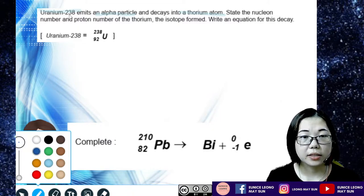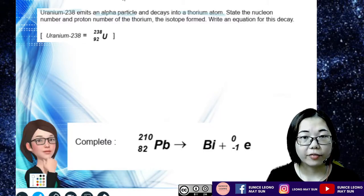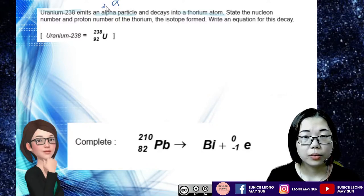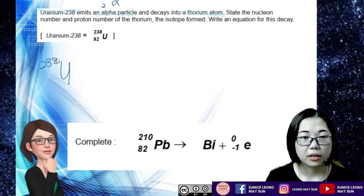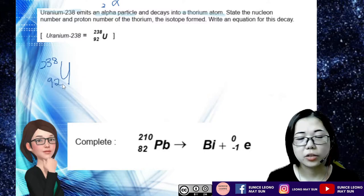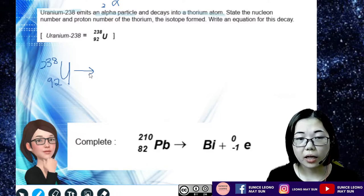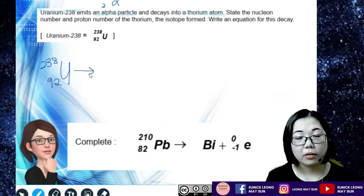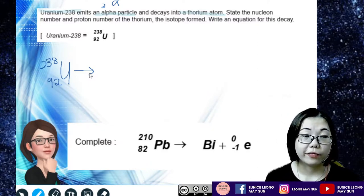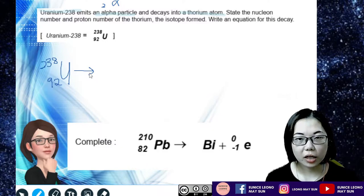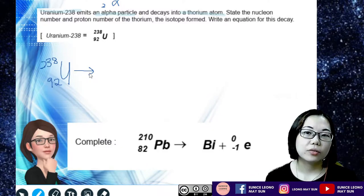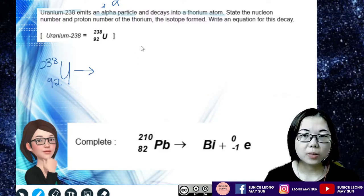It says that uranium-238 emits out an alpha particle, which is alpha-4,2. So I'm going to write uranium-238 with proton number 92, then put an arrow. Because radioactive decay only has one parent nuclide, after the reaction it will decay into a daughter nuclide and an additional radioactive particle. So in this case it's uranium-238, 92.